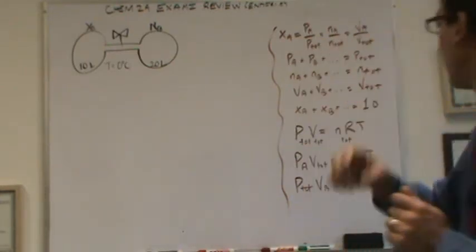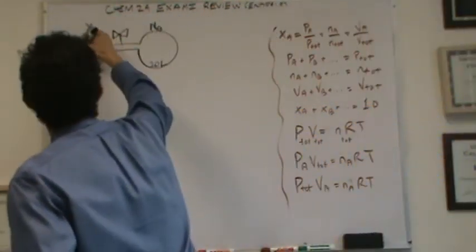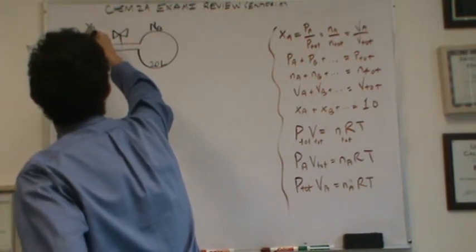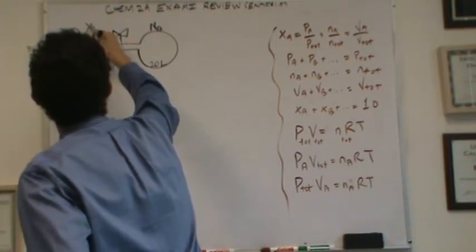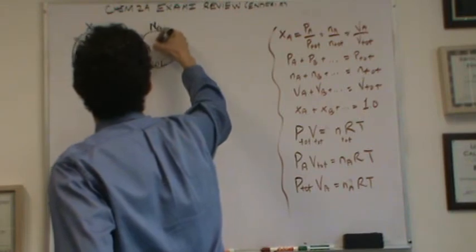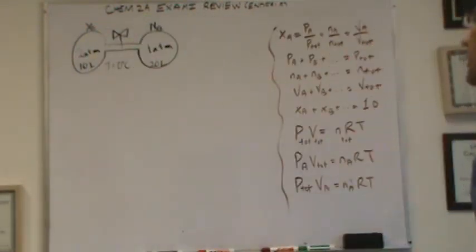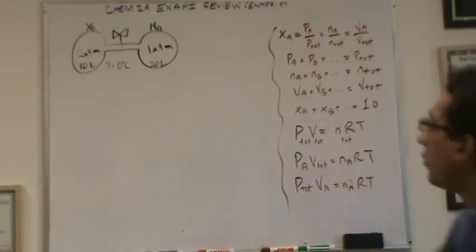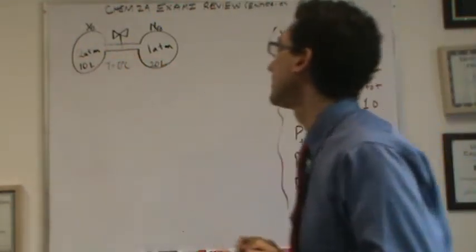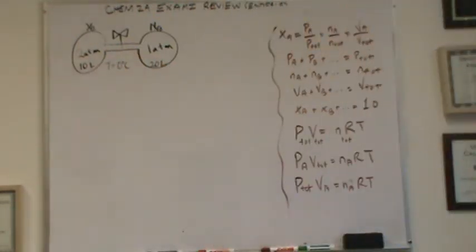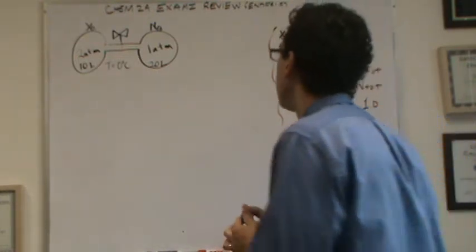And let's say the pressure in this container is 2 atm, and the pressure in this container is 1 atm. What I'm going to do is ask you for the partial pressures of xenon and neon after mixing. So I'm going to open this valve here and let them mix. And the other thing I want to know is what's the total pressure after mixing. So how would you set this kind of problem up?